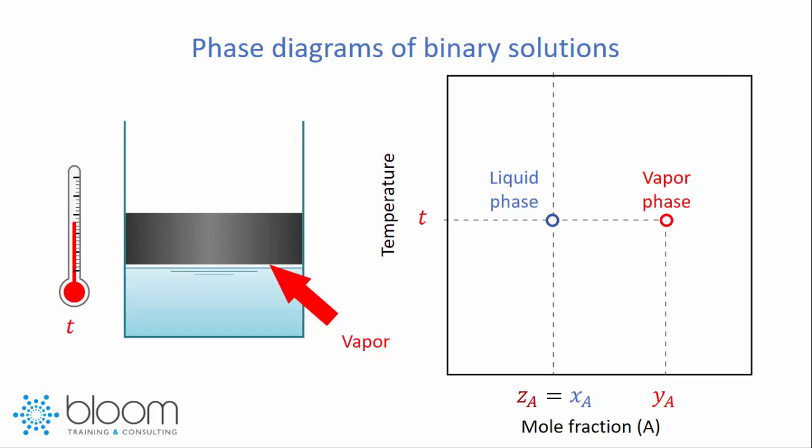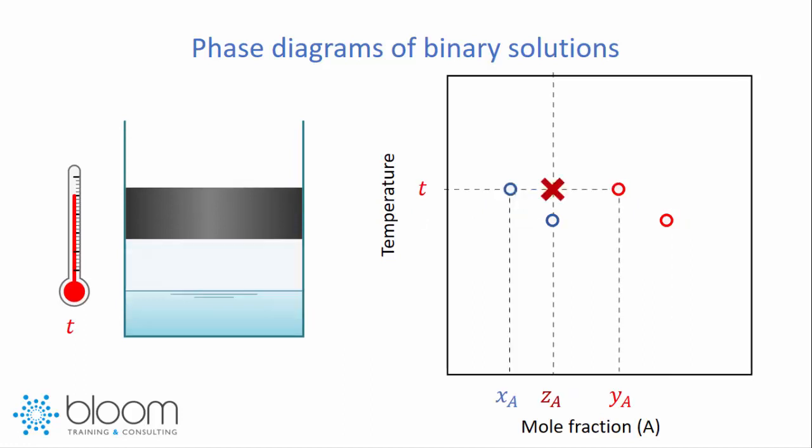Now let's add a little bit more heat to the system. Again, the temperature increases, we move to a new point, and we get new mole fractions of A in the liquid phase, namely XA, and in the vapor phase, namely YA. Notice that the mole fraction of A in the liquid phase has gone down when compared to the last point. That is due to the fact that A is moving to the vapor phase. Therefore, there's going to be less A in the liquid phase, and therefore its mole fraction is going to go down.